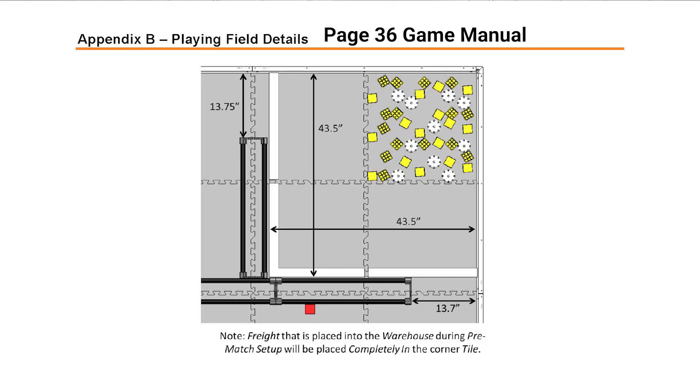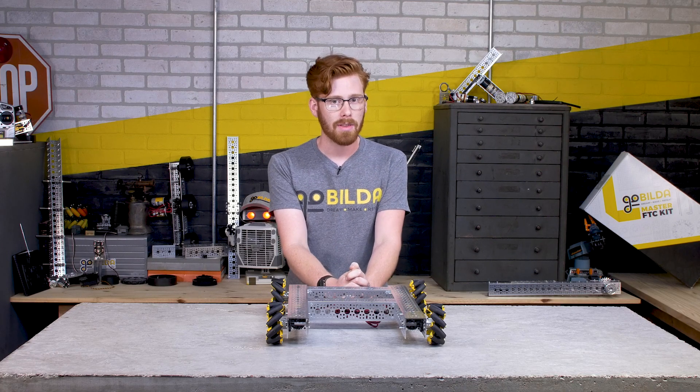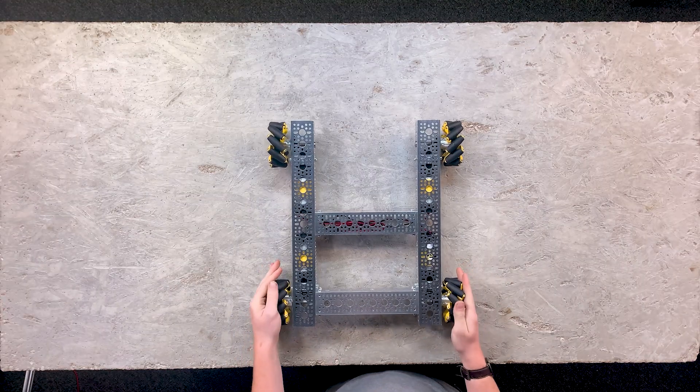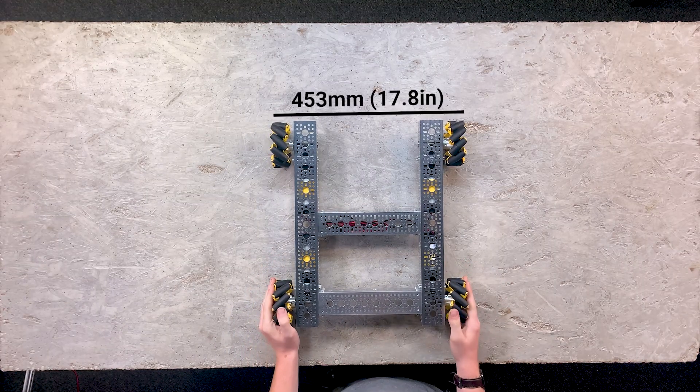First what we're going to be talking about is modifying the width. There is a 13.75 inch gap between the barrier and the playing field and you may want to make your robot smaller than that. By default, it definitely wouldn't fit through the gap, but we've got some cool ways to do that.